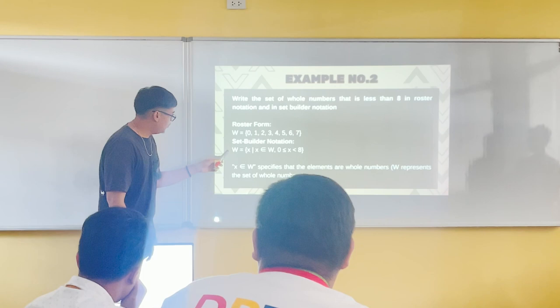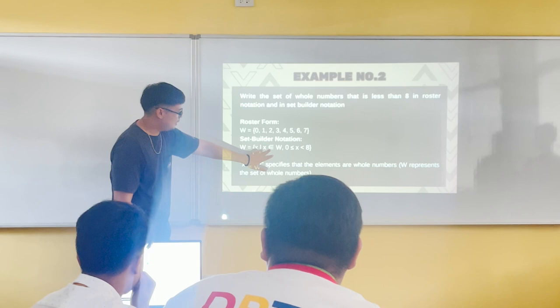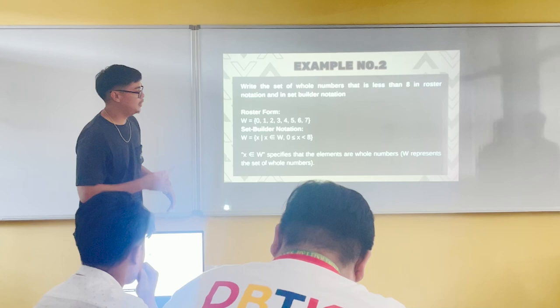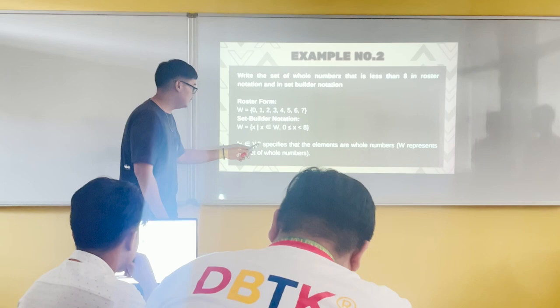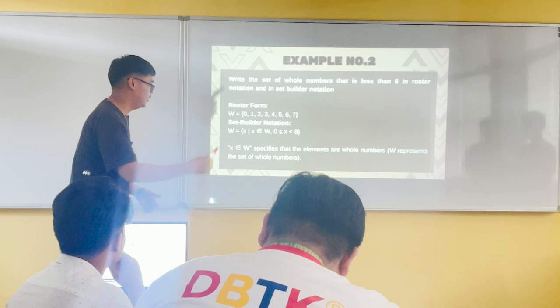The set builder notation is: set W = {x | x ∈ W, 0 ≤ x < 8}. This is read as: 'W is the set of all x such that x is an element of whole numbers, and the condition is 0 ≤ x < 8.' The W specifies that the elements are whole numbers.